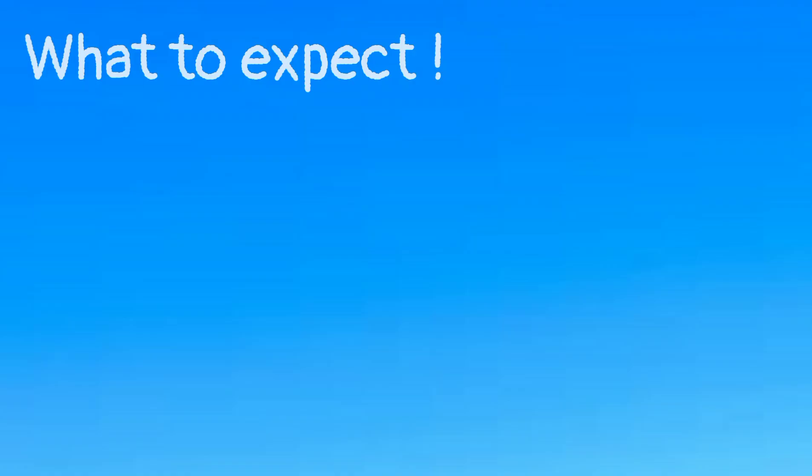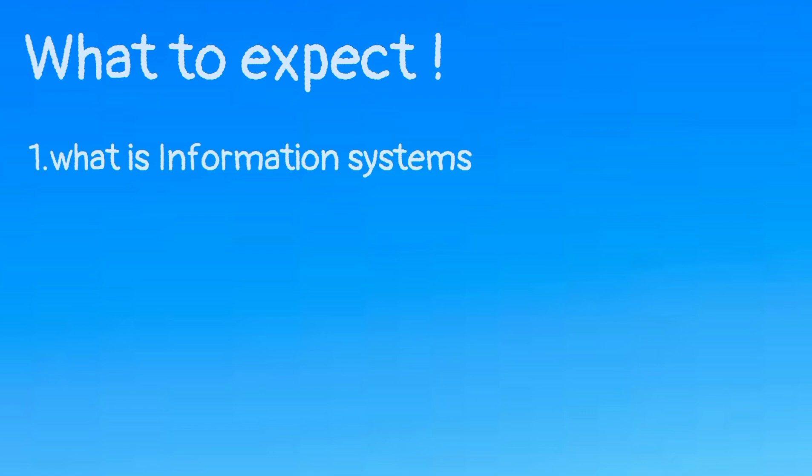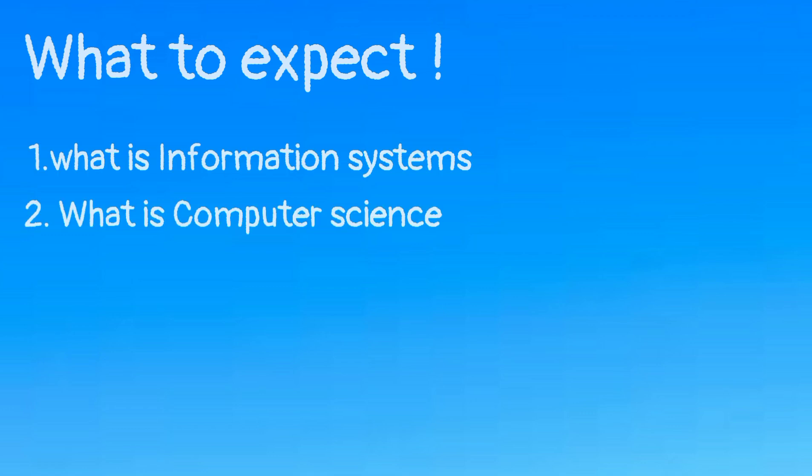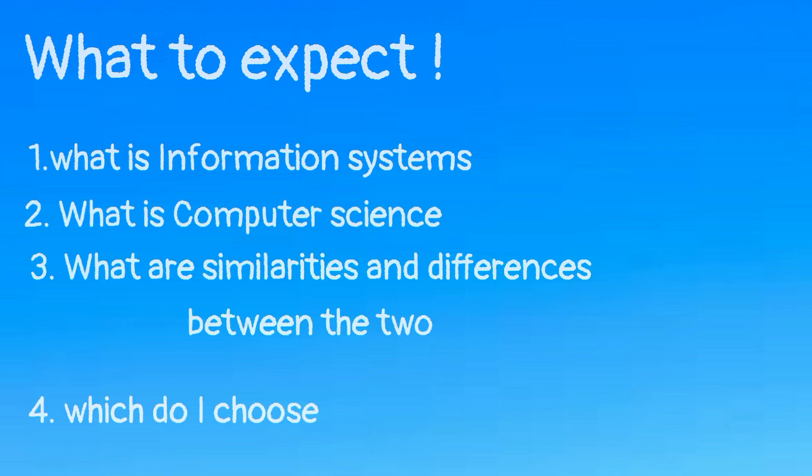This video is going to answer the following questions: What is computer science? What is information systems? What are the differences and similarities between the two? Which one is better? And also, what are the jobs that a person can venture into with their specific degree?